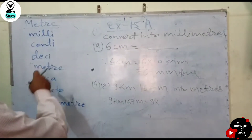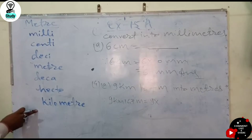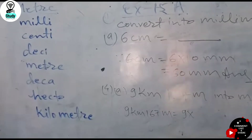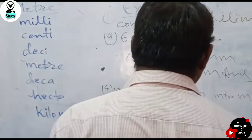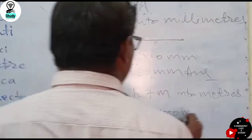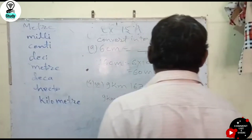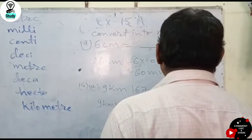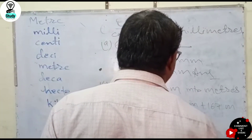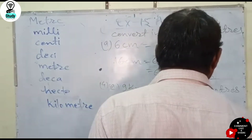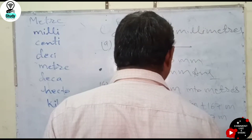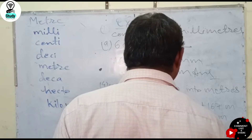How much greater is kilometer than meter? Starting from meter: tens, hundreds, thousands — so kilometer is 1,000 times greater. That means 9 multiplied by 1,000 meters plus the already given 167 meters. That means 9,000 plus 167 meters, which equals 9,167 meters.